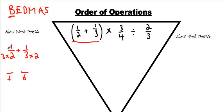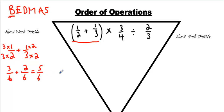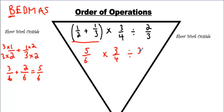You have to find common denominators, and the number 6 is common between these two, so we can make 6 here and 6 there. Whatever you do to the bottom, you have to multiply the top by the same thing, so you get 2 over 6, you're going to get 3 over 6, and now that the denominators match, you just add the numerators. You get 5 over 6. You're going to write 5 over 6, and then bring everything else down.